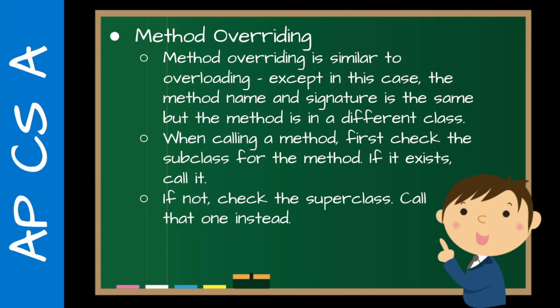Method overriding is very similar to overloading. In the case of overloading, we had the same method name but different arguments, and based on the signature it would call that particular method. This is similar, except in this case the method name and signature are the same but the method is in a different class. When calling a method, Java first checks the subclass for the method — if it exists, call it; if not, check the superclass and call that one instead.